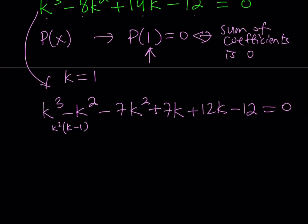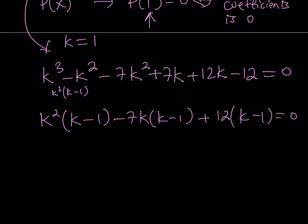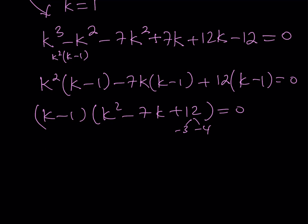So now when you group these terms, you can factor them. k² times k minus 1, minus 7k times k minus 1, plus 12 times k minus 1 is equal to 0. Now if you take out the k minus 1, then you get k² minus 7k plus 12 is equal to 0. And now here you can find two numbers whose product is 12 and whose sum is negative 7. Those numbers are negative 3 and negative 4.